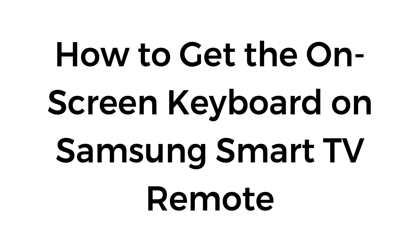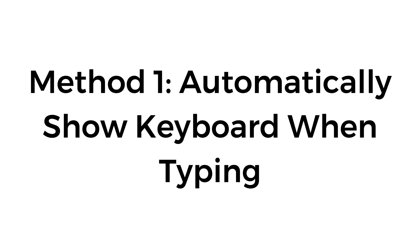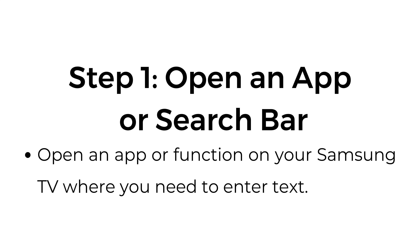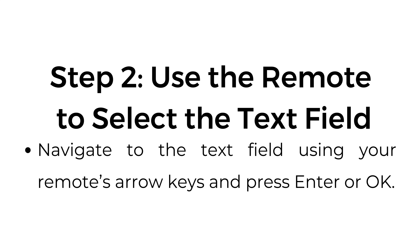How to get the on-screen keyboard on Samsung Smart TV remote. Method number one: automatically show keyboard when typing. Step number one, open an app or search bar — open an app or function on your Samsung TV where you need to enter text.